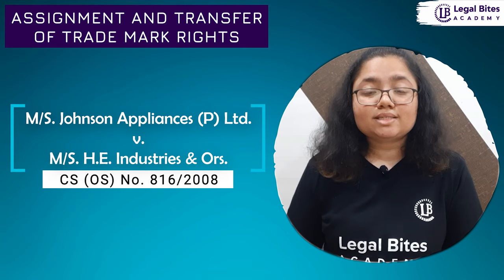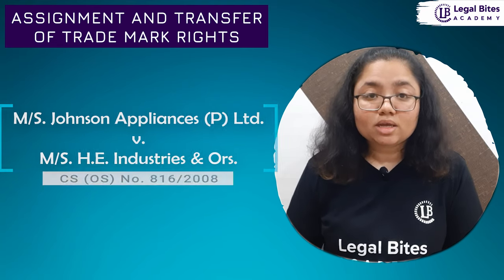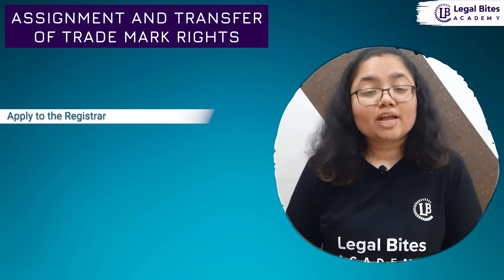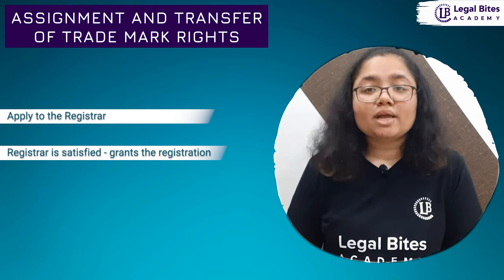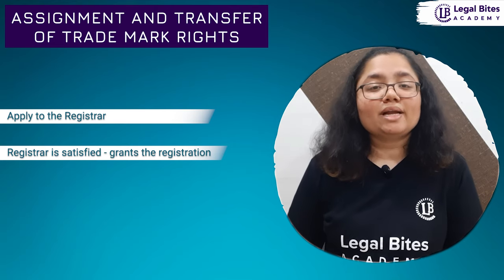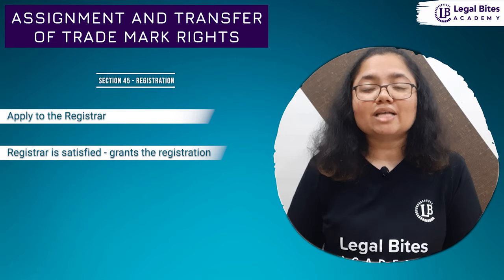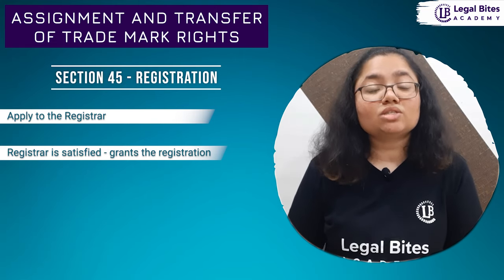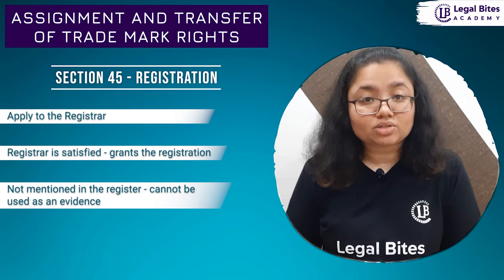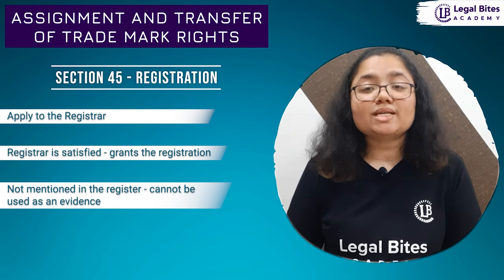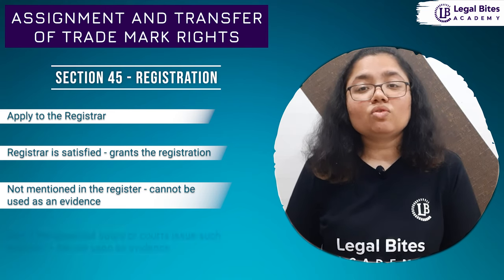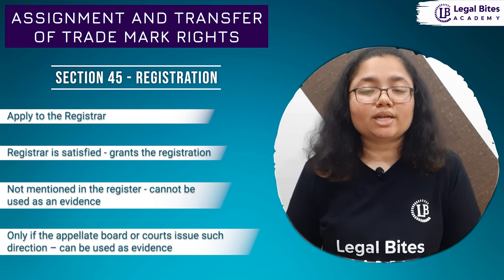Whenever a person wants his title registered for the trademark, he has to apply to the registrar to make such registration of trademark in his name. If the registrar is satisfied with the proofs attached, he can grant the registration and enter such details in the register as per section 45 of the Act, only if such registration is not disputed. If such transfer or assignment is not mentioned in the register, the same cannot be used as evidence by any court or even the registrar, unless the appellate board or court issues such directions.